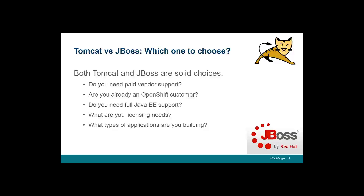Consider your licensing needs — Tomcat is a little more permissive than JBoss. To use JBoss EAP in production, JBoss is open source and LGPL licensed, but you're supposed to get a JBoss middleware subscription. You can use Wildfly with no problem. What kind of support do you need? What type of applications are you building? JBoss implements all these different APIs, but do you actually need them? Sometimes you can just add an open source project to Tomcat and get use of that API. If you want CDI in Tomcat, just integrate the Weld project. If you want JSF support, integrate the Mojarra project into Tomcat, and you've got that support.